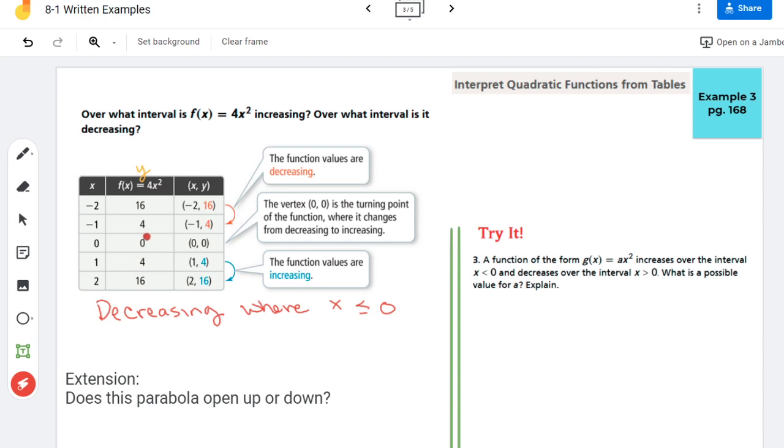And then once it hits 0 you can see it starts increasing again, it starts going back up. So I would say increasing, or the graph is increasing where x is greater than or equal to 0.